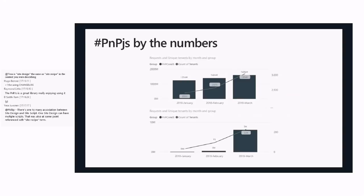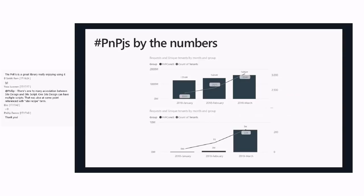It is April, so I wanted to update folks on the March numbers. We continue to see phenomenal growth, for which I'll always say thank you to everybody out there in the community, because you all drive that growth by using the libraries in your projects. We're up to 1.6 billion requests going through the library in the month of March, and we're into 3,000-plus tenants for the month of March, which is phenomenal.